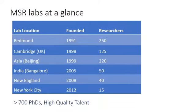We have labs scattered all over. The first one was founded in Redmond, and India was founded in 2005. The researcher counts are not exact — it was right at the time I took the snapshot — but we basically have over 700 PhDs of very high-quality talent.